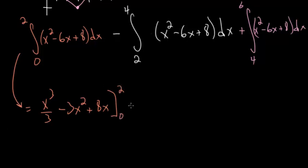Then we'll subtract the same antiderivative with bounds from 2 to 4: x cubed over 3 minus 3x squared plus 8x. And then we'll add this final integral, which will look identical to the first one but with bounds of 6 and 4.